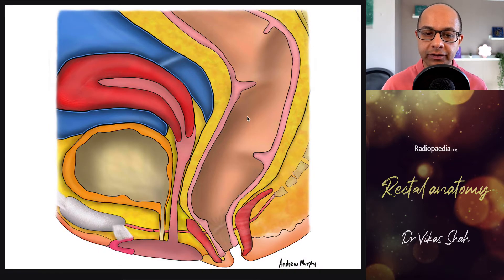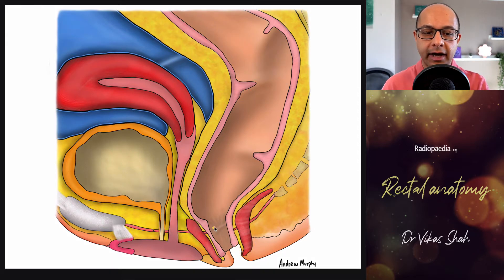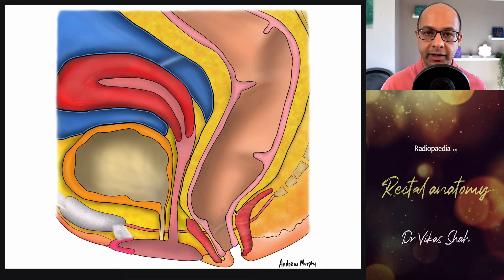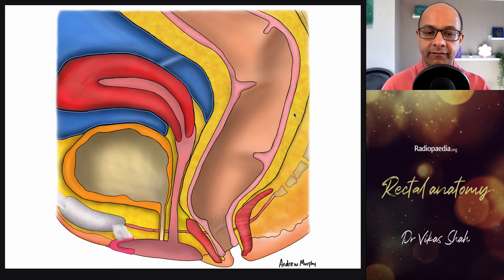On sagittal imaging — this is a female patient — we see down here the external sphincter muscle and the internal sphincter muscle, and between them the intersphincteric fat, which becomes relevant when thinking about low rectal cancers. Once again we see the mesorectal fascia, which envelopes the mesorectal compartment, the rectum, and the mesorectal fat.